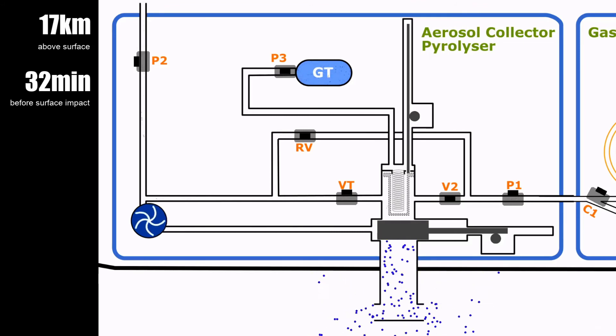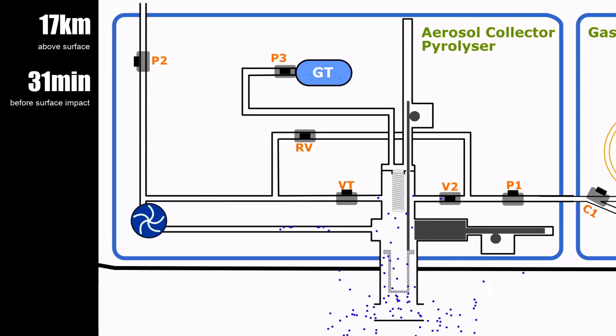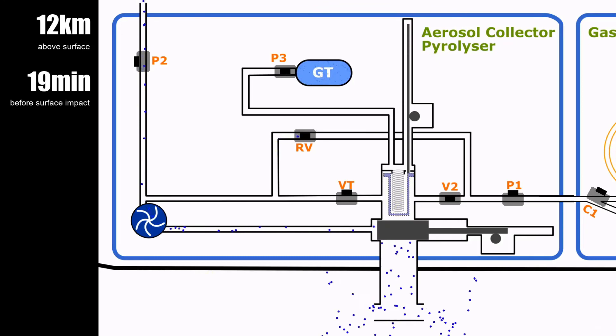Once again, we turn on the pump unit, open the gate valve, and extend the collection filter into the sampling tube. 31 minutes before surface impact, the pump unit is turned off, the filter is retracted into the oven, and the gate valve is closed. The oven is then turned on and pyrolysis begins.